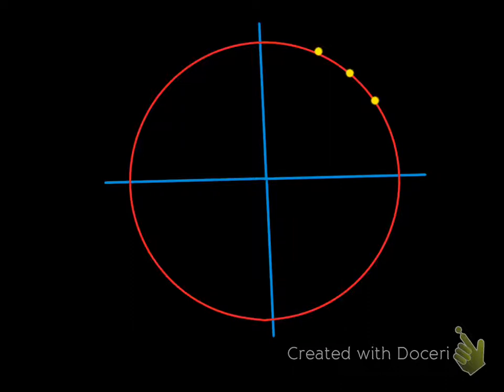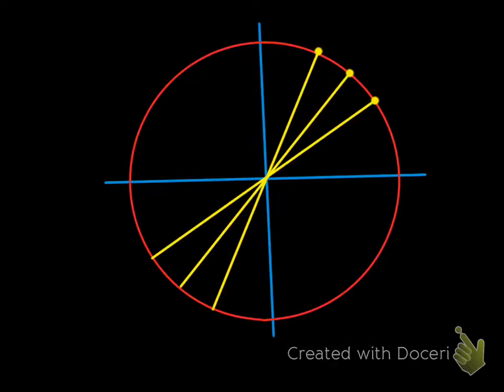All right, so from those three points, all I'm going to do is line up my straight edge and fire one, two, and three. And now I've got some slices of pizza.